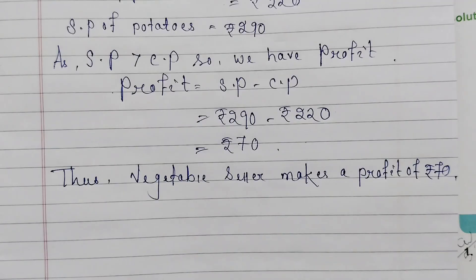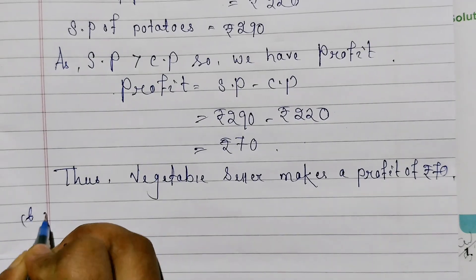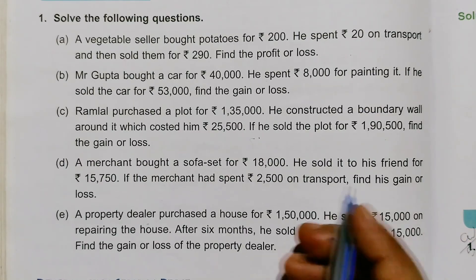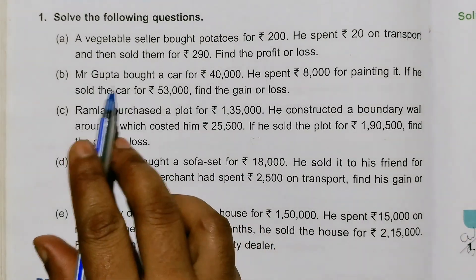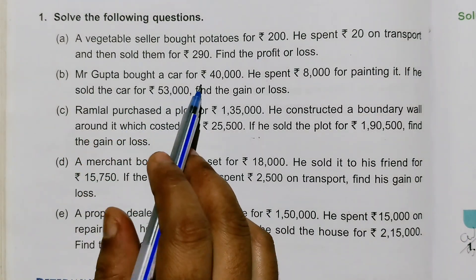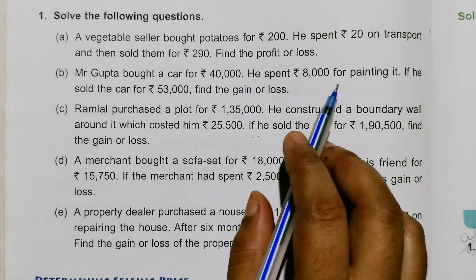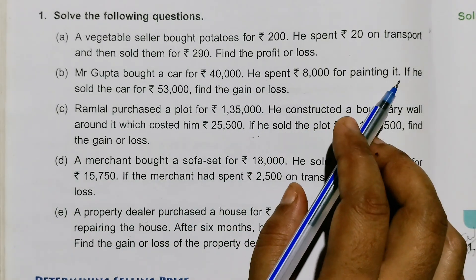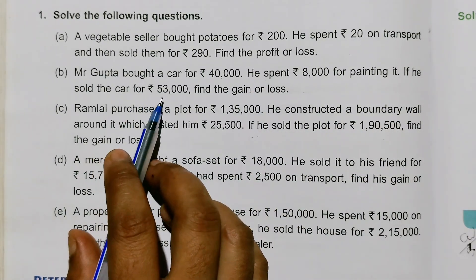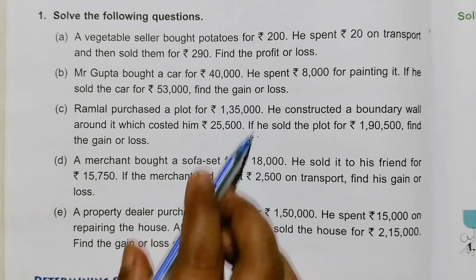Now we solve point B. Mr. Gupta bought a car for 40,000 rupees. He spent 8,000 rupees for painting it. If he sold the car for 53,000 rupees, find his gain or loss.